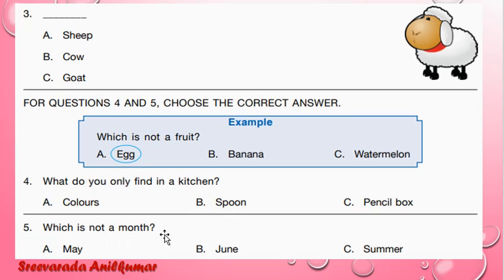Which is not a month? May is a month. June is a month. Summer is a season, not a month. So C is the correct option.